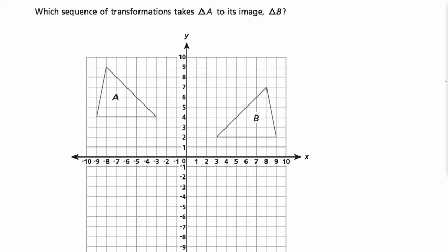Welcome, let's read this question together, and then you might pause the video and try it on your own. They want to know which sequence of transformations makes triangle A, takes triangle A to its image triangle B. So how do we get from A to B over here? What do we do?